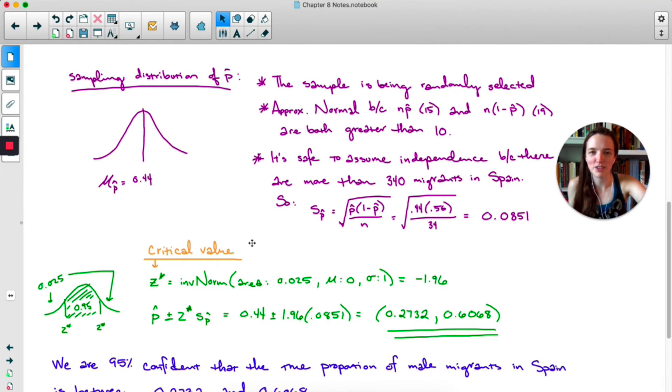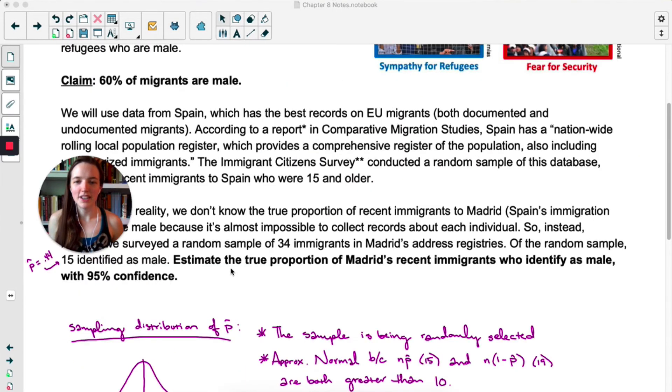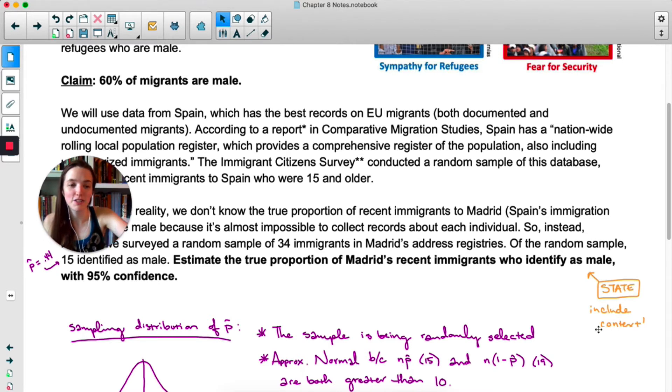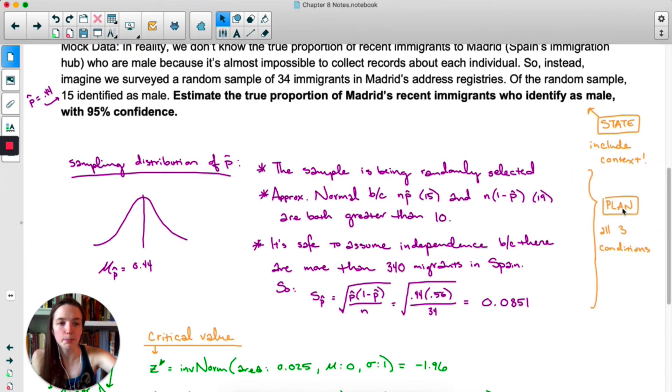I just want to point out I was color coding things here for a reason. When you are asked to estimate the true proportion of something, whether the problem says it or not, you need to use the four step process. Just like we've done in previous units. The reason we have to do the four step process is it's going to help us not miss anything. Once again, the four step process is state, plan, do, conclude. Now the state step they basically did for us. All you want to say for state is what you want to find. So estimate the true proportion of Madrid's recent immigrants who identify as male with 95% confidence. Literally all you should write for the state step. Make sure that when you're stating you always have context. You don't just want to say the true proportion. You want to say the true proportion of and then say what the problem is about.